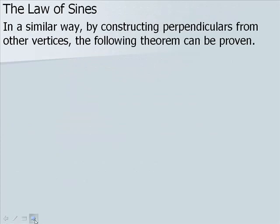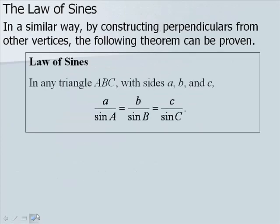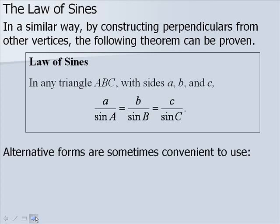For the law of sines, we have the following theorem. In any triangle ABC with sides a, b, and c: a over sine of A is equal to b over sine of B, which is equal to c over sine of C. Alternative forms are sometimes convenient to use — if we flip them, we have sine of A over a equals sine of B over b, which is equal to sine of C over c.